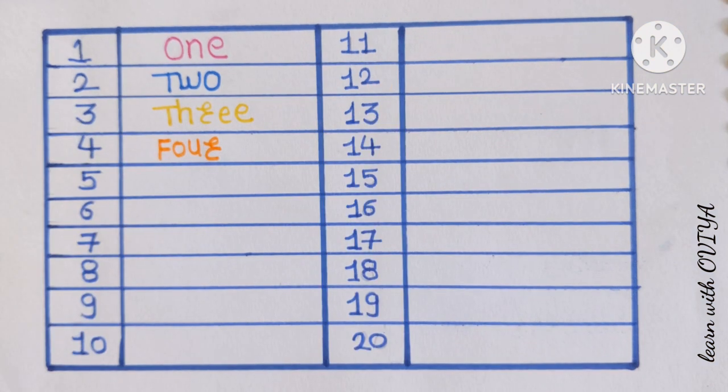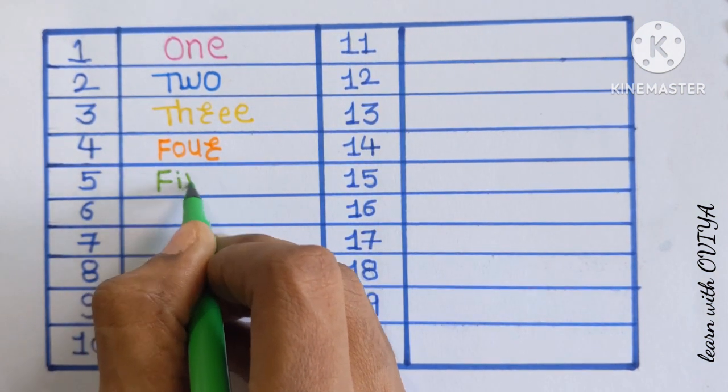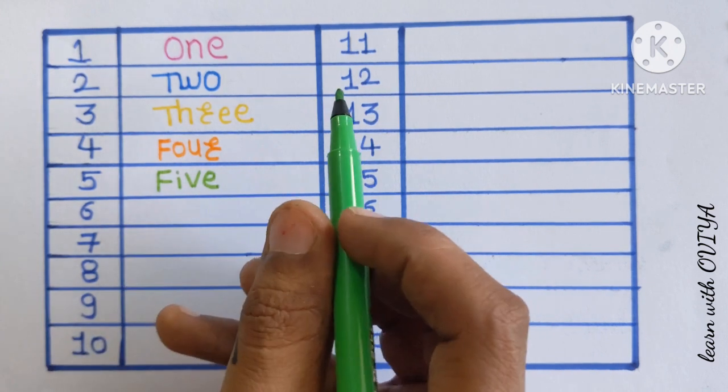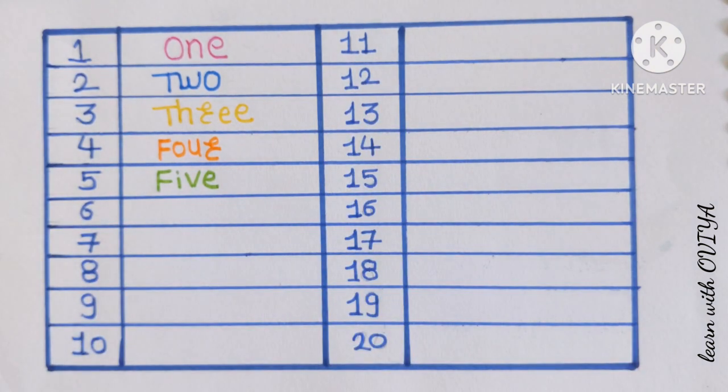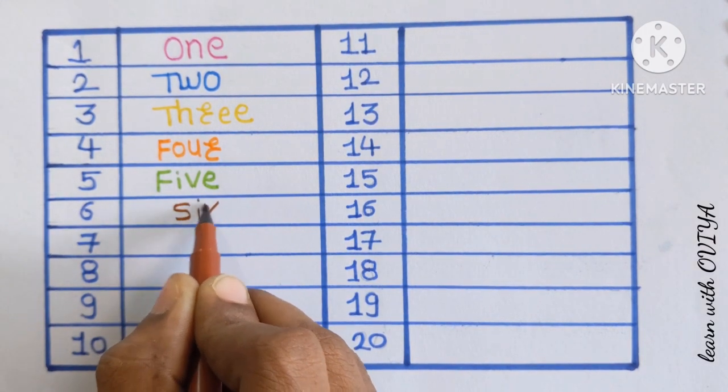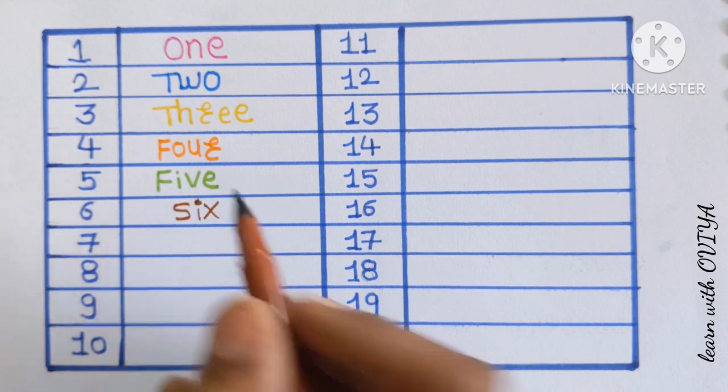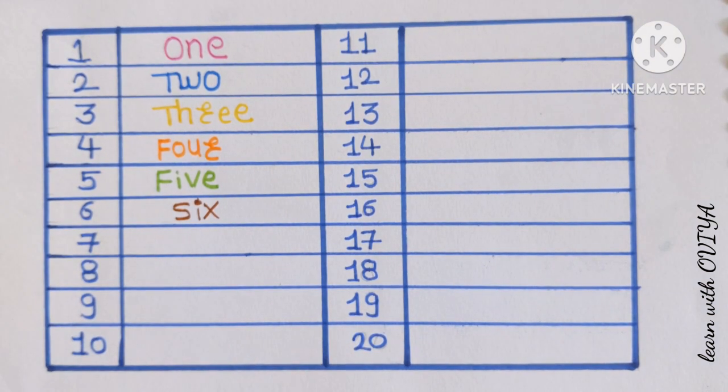Next number is 5. F-I-V-E. 5 with a light green color. Next number is 6. S-I-X. 6 with a brown color.